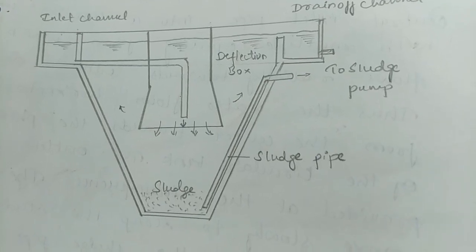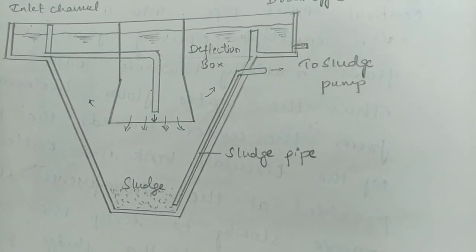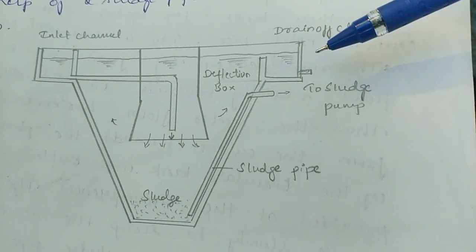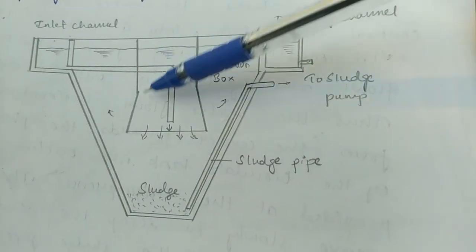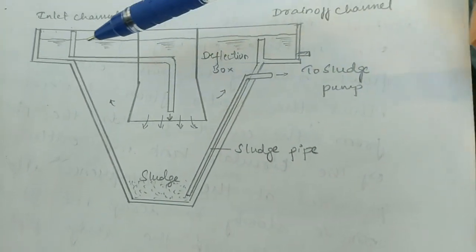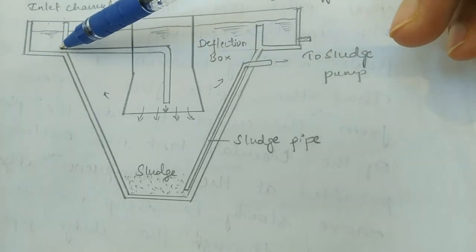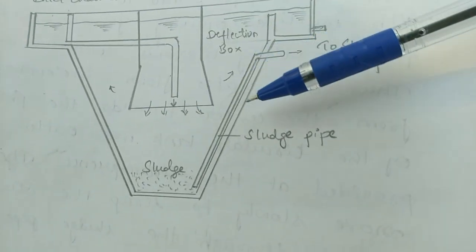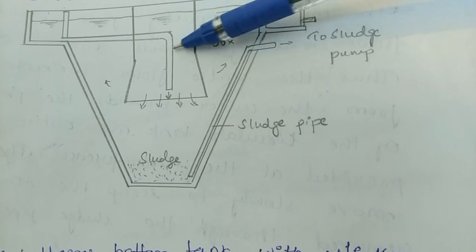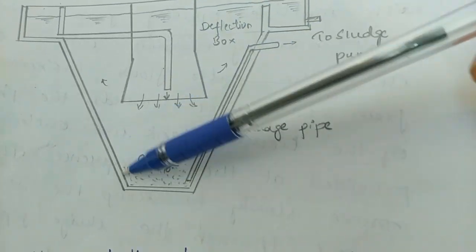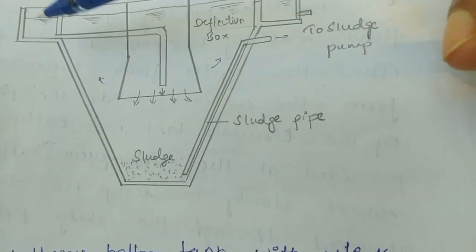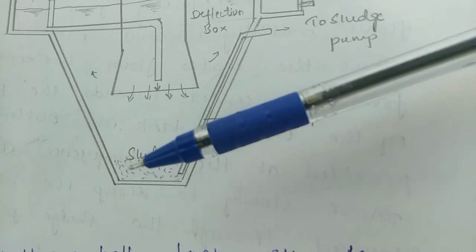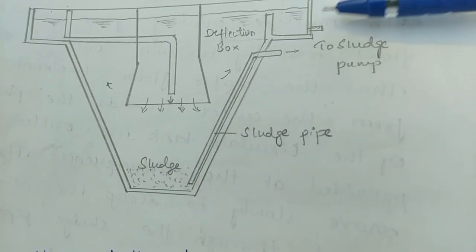The third type is the hopper bottom tank with vertical flow. Its components include an inlet channel, a drain-off or outlet channel, and a deflection box. Raw water enters from the inlet channel and is distributed evenly by the deflection box. The water is given rest, and the particles that settle at the bottom as sludge are taken out from the sludge pipe and pumped off.